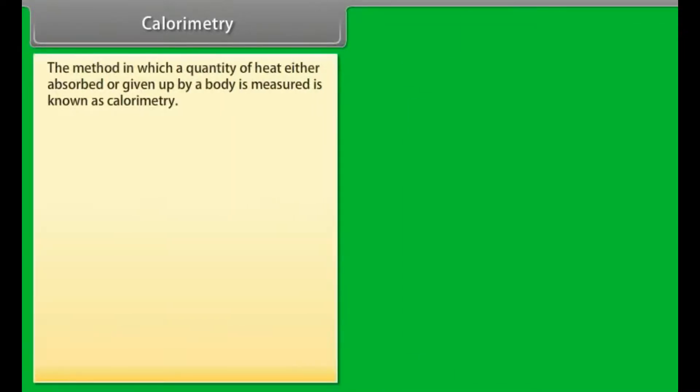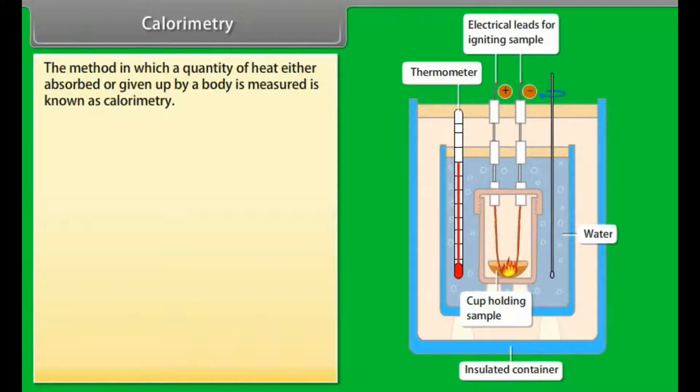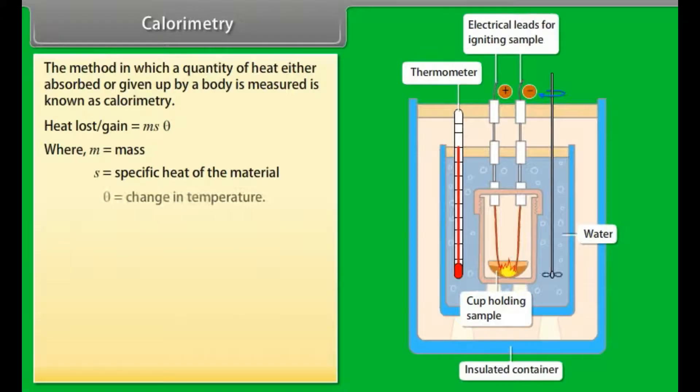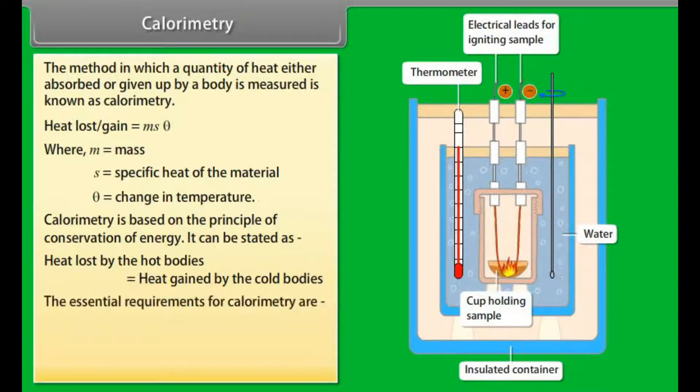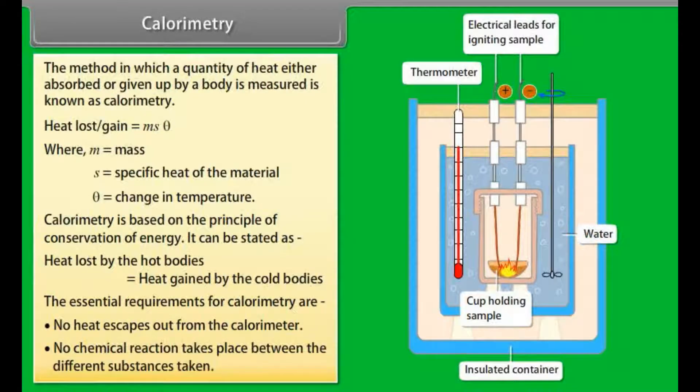Calorimeter. The method in which a quantity of heat either absorbed or given up by a body is measured is known as calorimetry. Heat loss or gain = M S θ, where M = mass, S = specific heat of the material, and θ = change in temperature. Calorimetry is based on the principle of conservation of energy. It states that heat lost by the hot bodies is equal to heat gained by the cold bodies. The essential requirements for calorimetry are: no heat escapes out from the calorimeter, and no chemical reactions take place between the different substances taken.